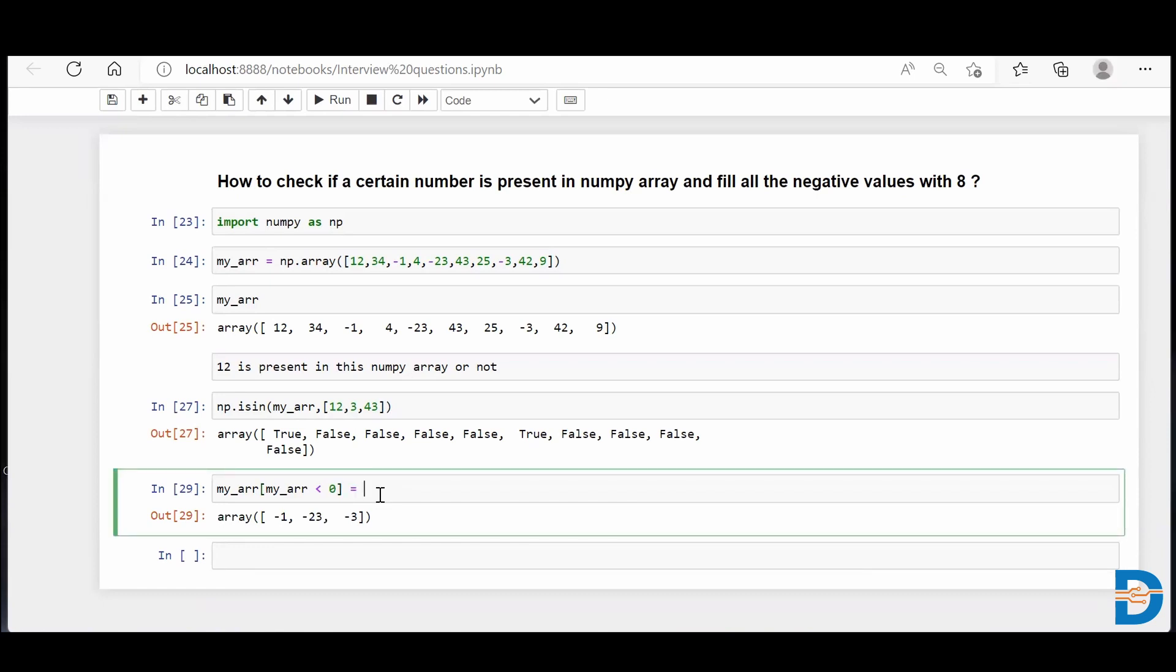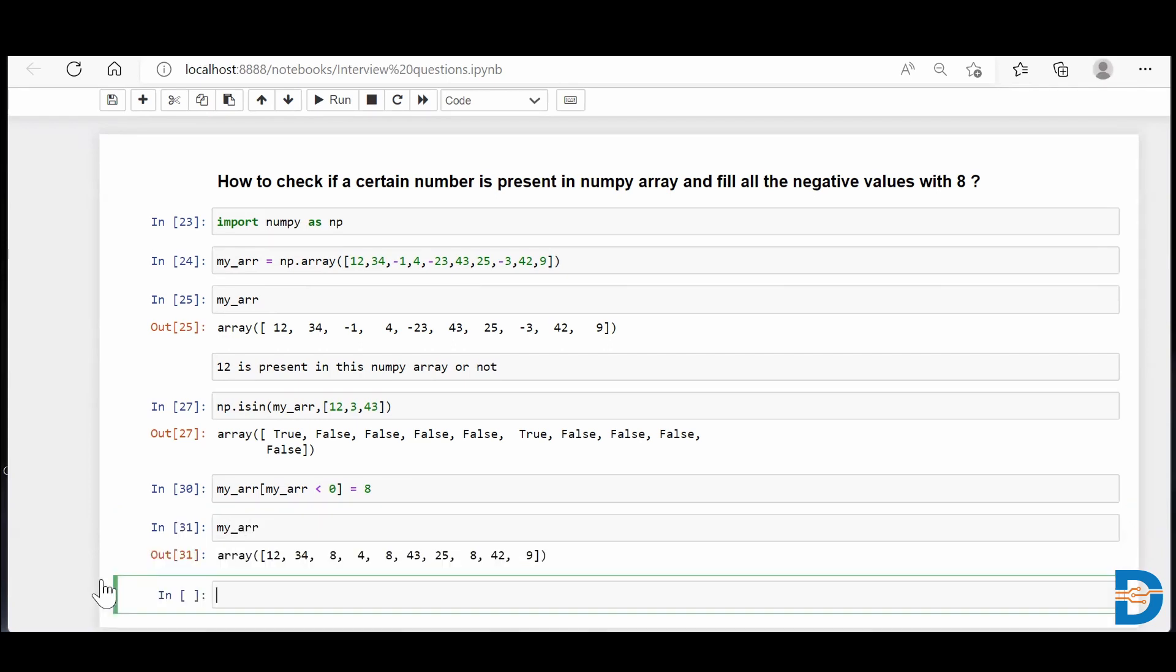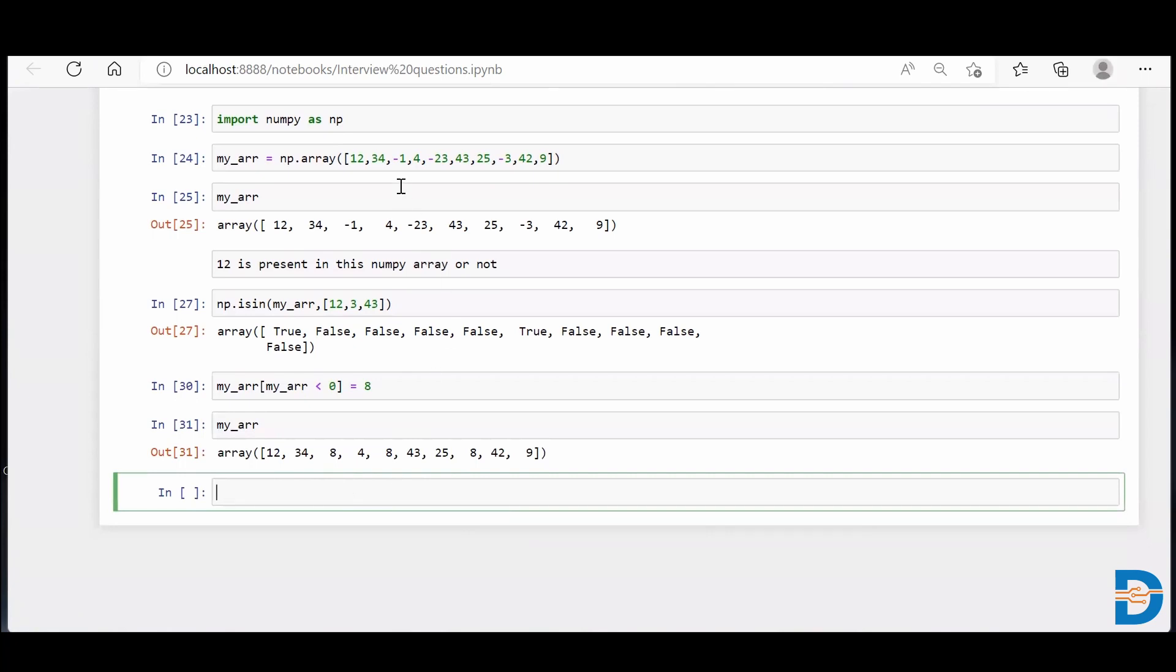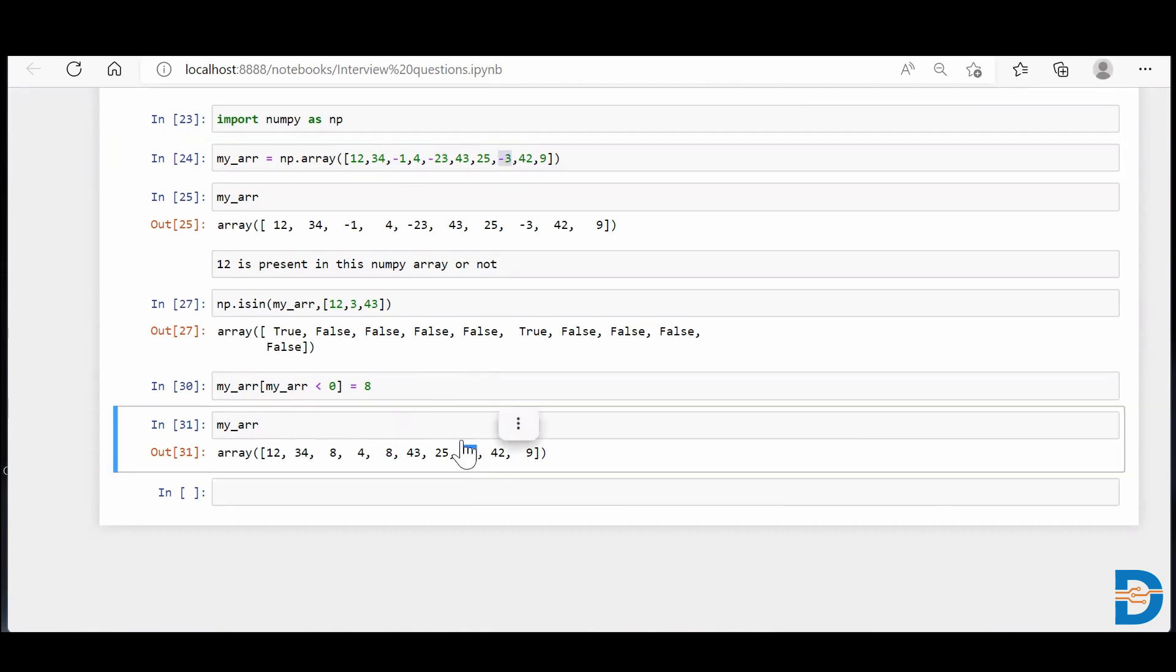Now if I simply say equal to 8, then the cell will run but it didn't reflect anything in my screen. But let's see my original NumPy array if anything has happened or not. When I run my_arr, I see where it was minus 1 it got changed to 8, where it was minus 23 it got changed to 8, and where it was minus 3 it got changed to 8 as well. So in all the positions where the negative values were there, it got changed to 8.